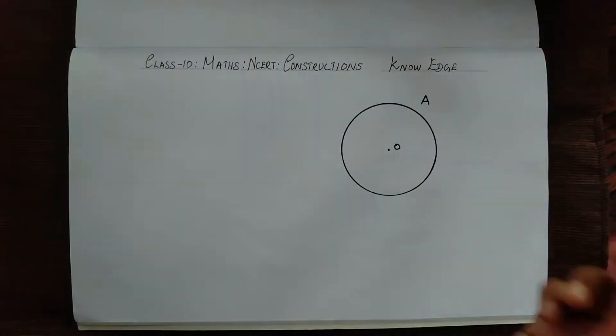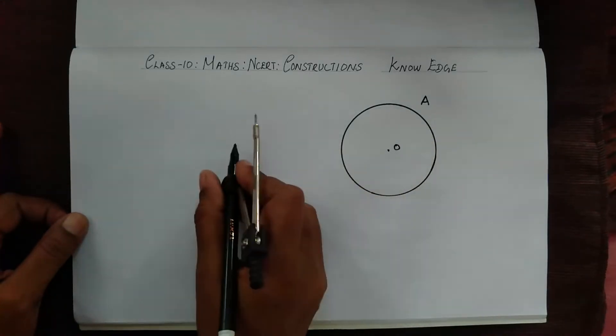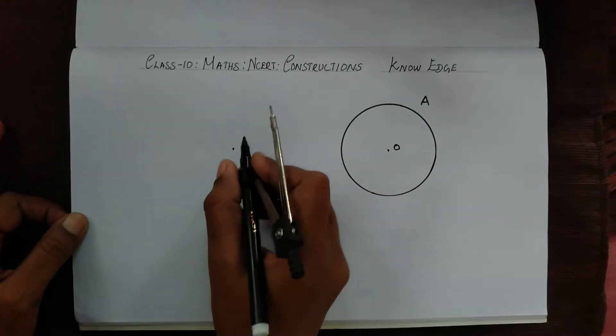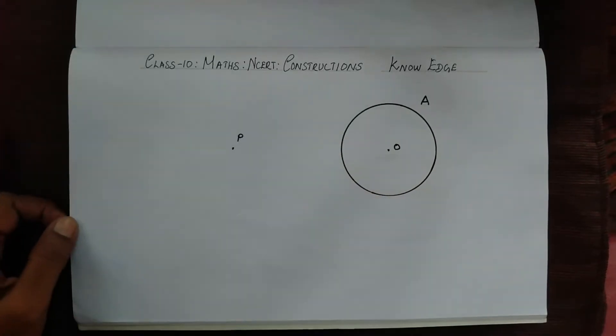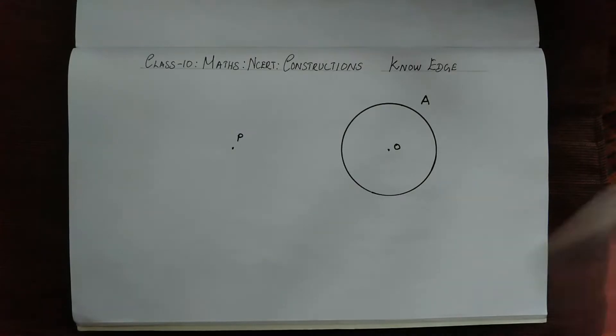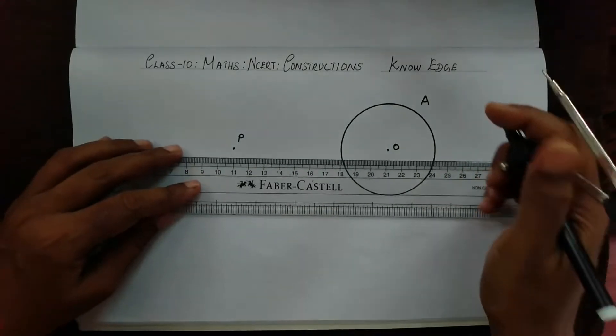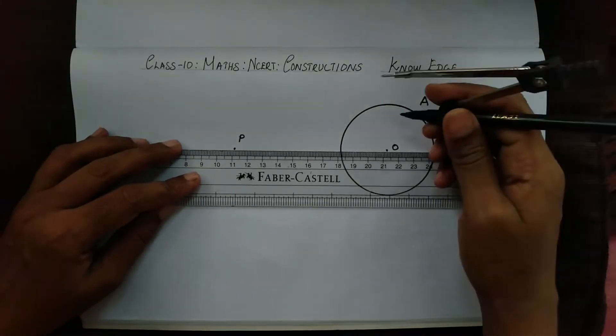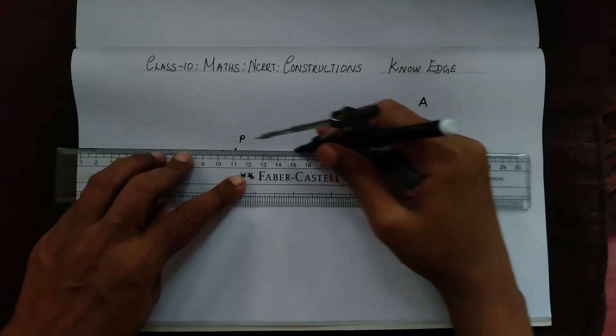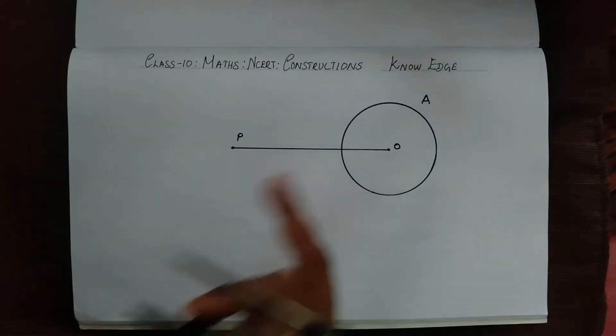Now let's take a point outside the circle and name it as P. The next step will be that we have to join OP. Now we have to find the midpoint of this line.